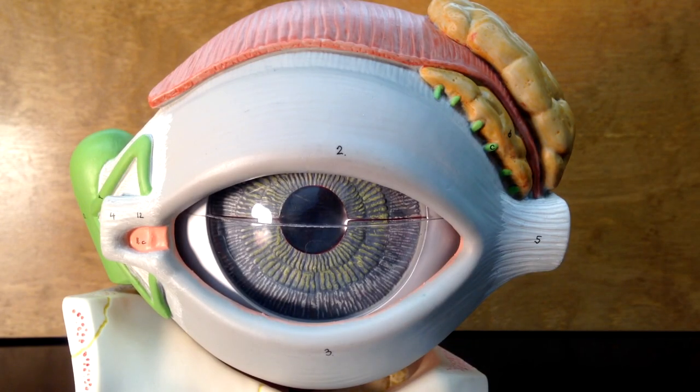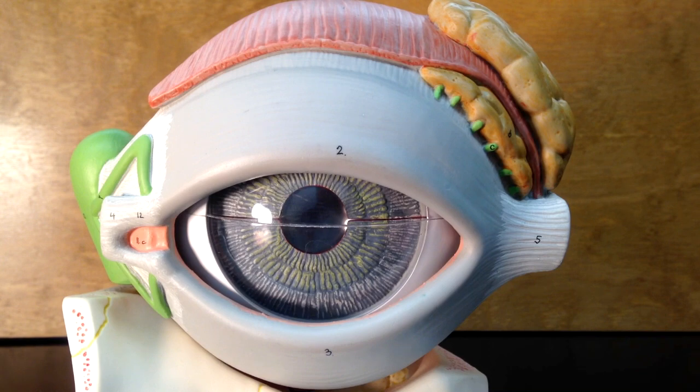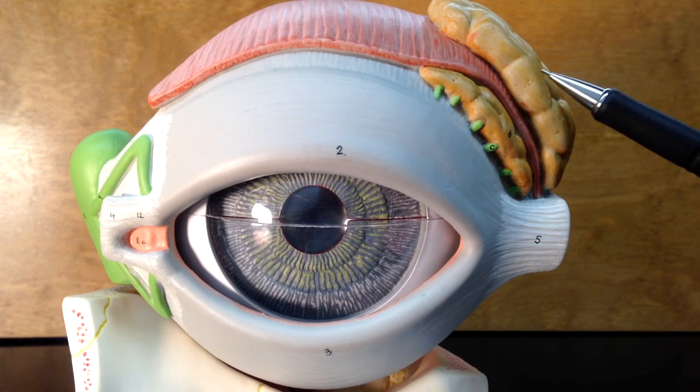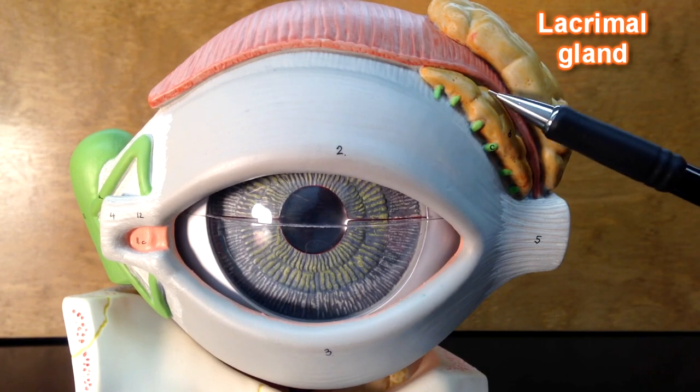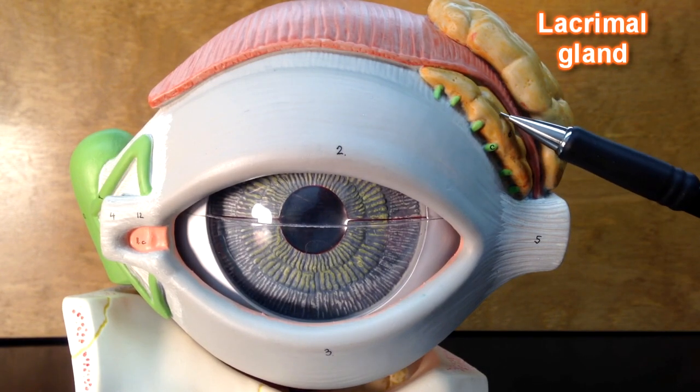This is the eye model right here, and some of the structures that we can see from this vantage point would be this structure right here, this is the lacrimal gland, and we can see lacrimal gland under here as well.